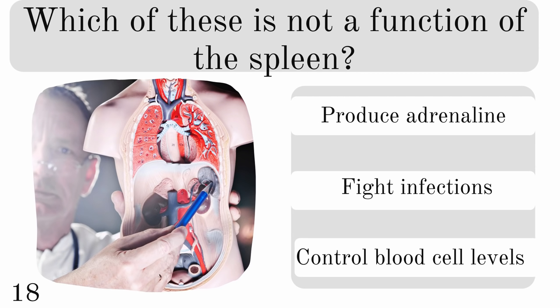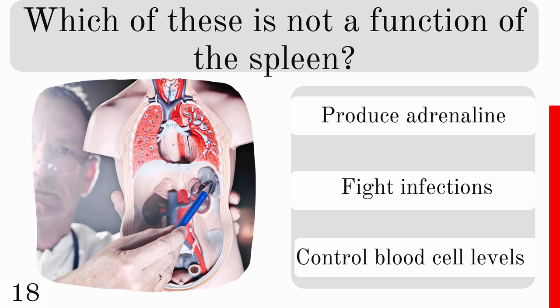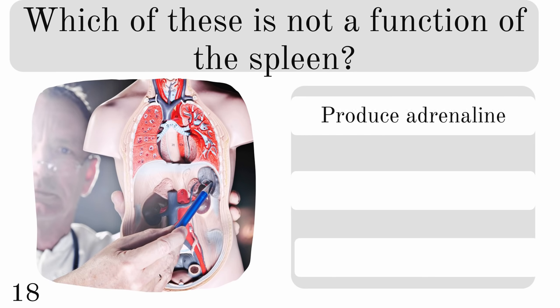Which of these is not a function of the spleen? To produce adrenaline, to fight infections or to control blood cell levels? And the correct answer is it doesn't produce adrenaline.